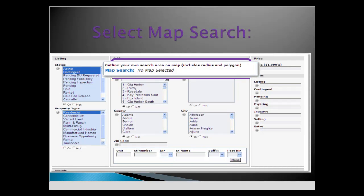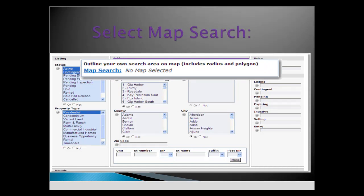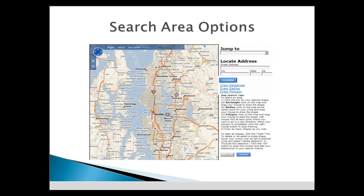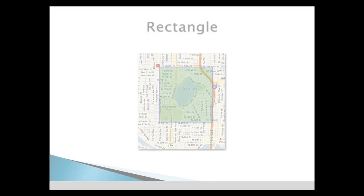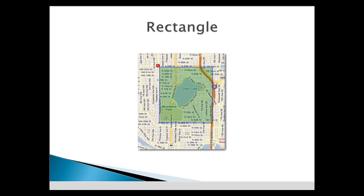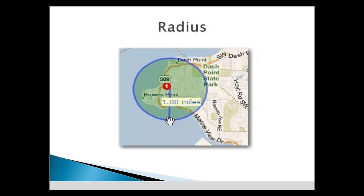Select Map Search from the top of most search screens. From the Map Search, draw a rectangle, a radius, or a polygon. A rectangle may be used to create a grid pattern of city streets, like this area around Green Lake. Radius may be used to ensure you stay within the immediate neighborhood — for example, to search one mile around the Browns Point neighborhood just north of Tacoma.